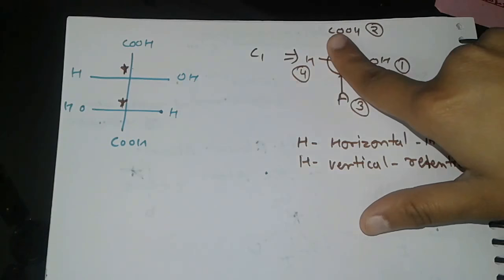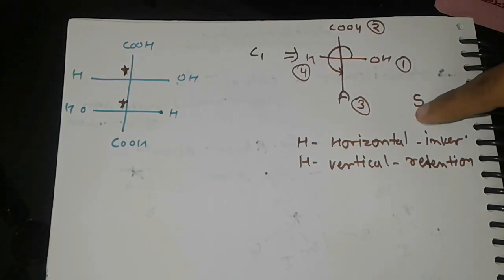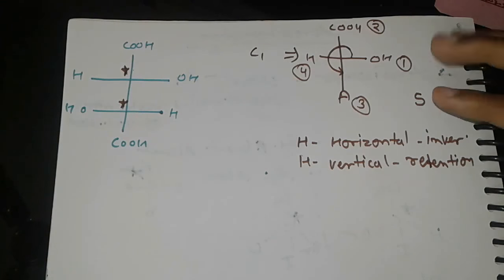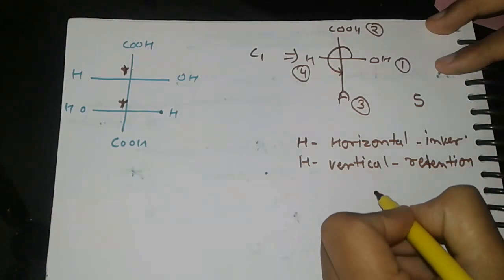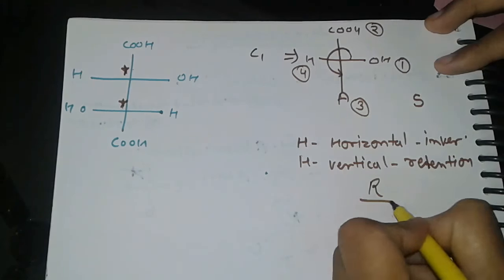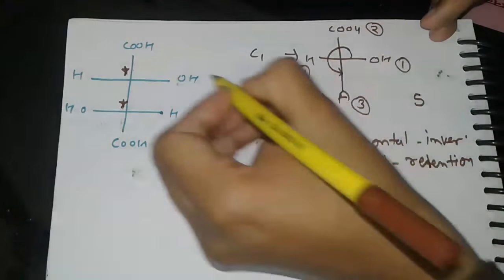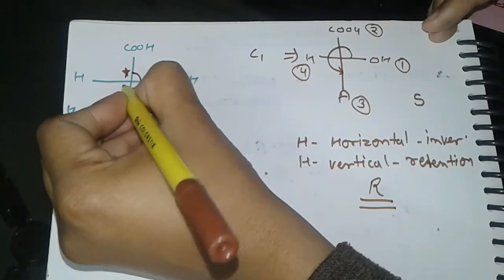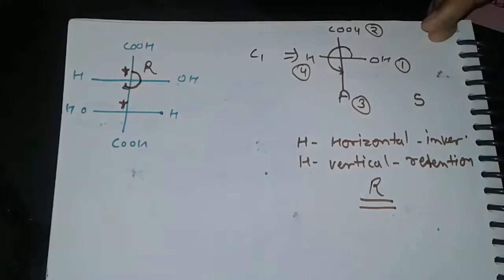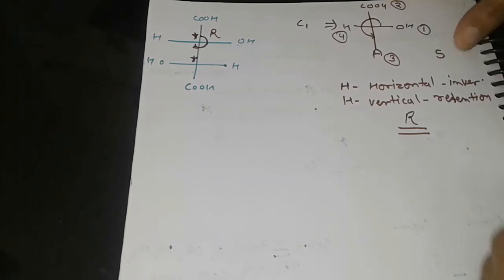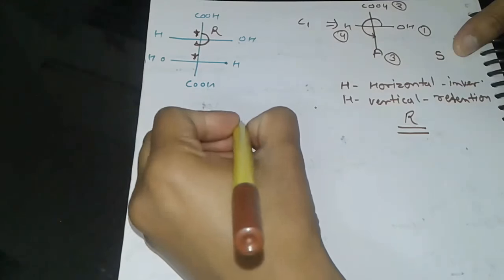If hydrogen is in horizontal line, we do inversion. If in vertical line, we do retention. We're in vertical position, so we change one time. Since we don't do retention, we do opposite configuration: R. So the first carbon atom has clockwise rotation R.